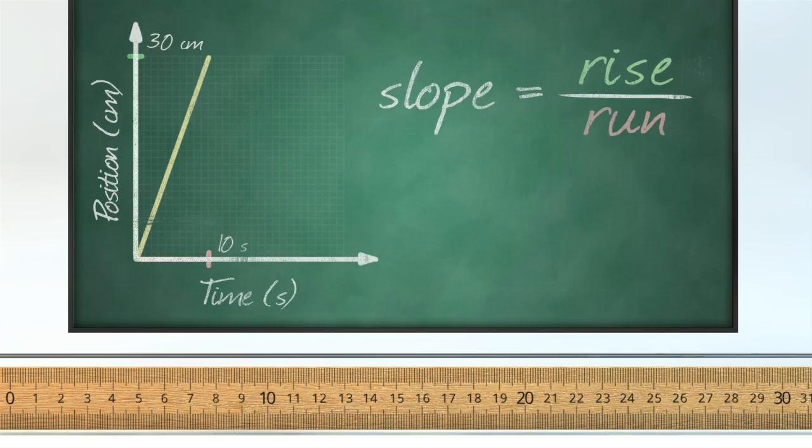We can see that the rise is going to be equal to 30 cm, since we start at 0 and end at 30. But now look at the run. We are starting at time 0, and run the experiment for 10 seconds. So the run is 10 seconds. 30 cm divided by 10 seconds is equal to 3 cm per second, which is the velocity.